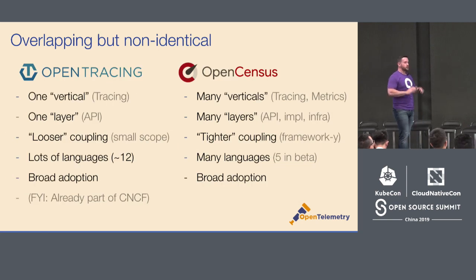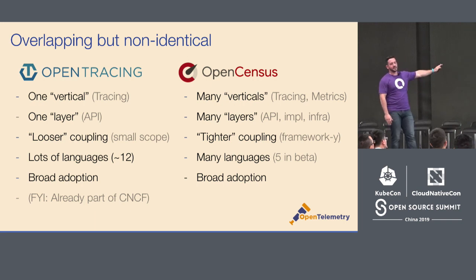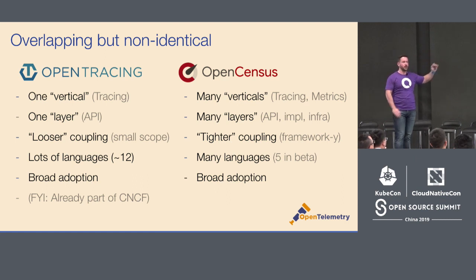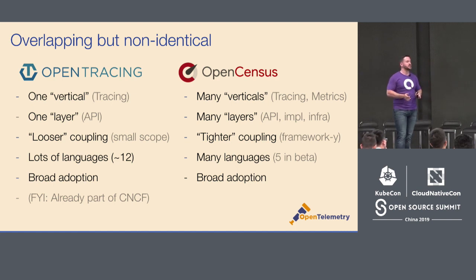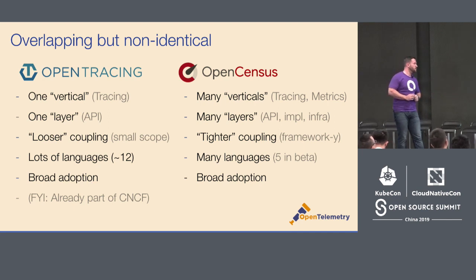So there were two projects that existed. One was called OpenTracing, the other was called OpenCensus. They were similar but not the same. OpenTracing came out first, around 2016. It solved one vertical — tracing — and had one layer: an API, just the instrumentation aspect. It was loosely coupled, supported a ton of different languages, and was broadly adopted. It's already part of CNCF, which shows it was widely used.